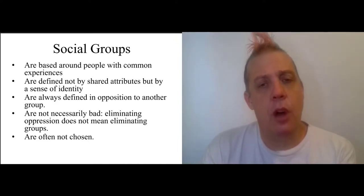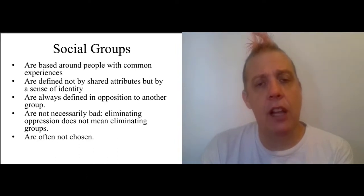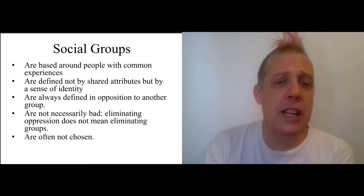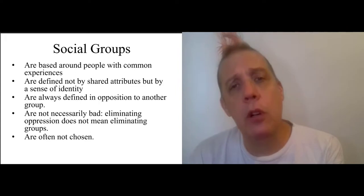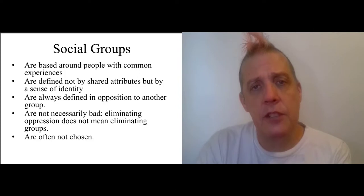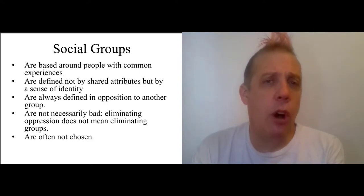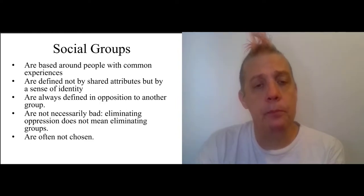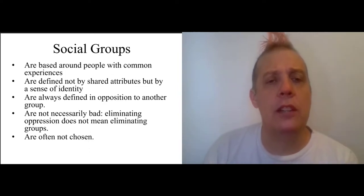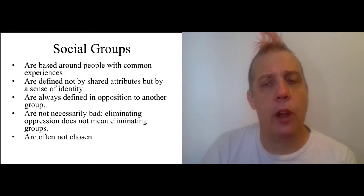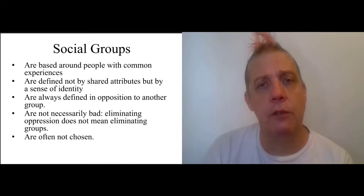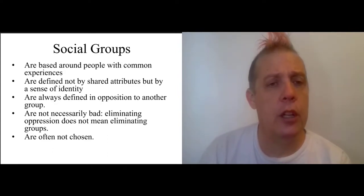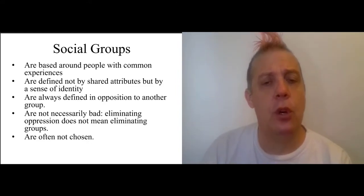Social groups are always defined in opposition to other groups — not necessarily oppression, but opposition. You always need to have a contrast, or perhaps several contrasts. She says that social groups are not necessarily bad; eliminating oppression does not mean eliminating group identity. This is going to be important for a lot of people for whom their group identity is important for their sense of self. These identities are often not chosen — you are just born, and people label you male or female, black or white or whatever. That is broadly the same approach that Haslinger is going to be dealing with, focused on injustice as a social and group process.